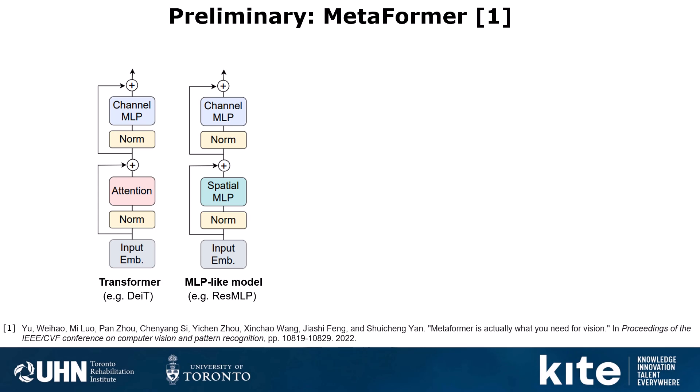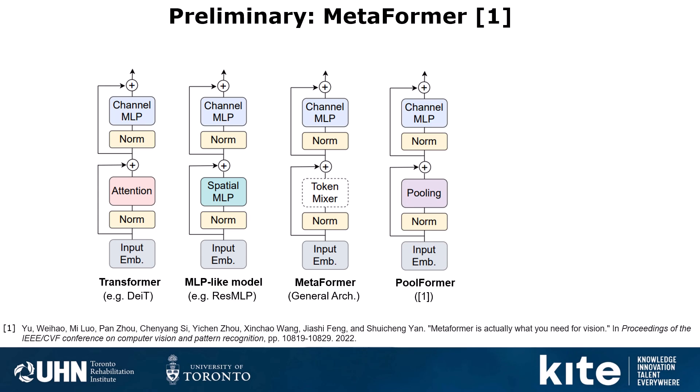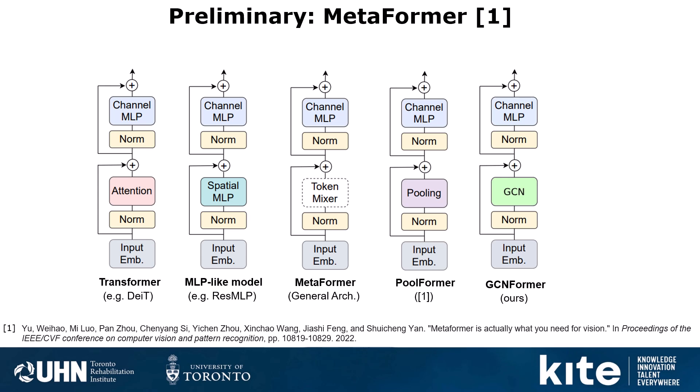In the MetaFormer paper, they propose MetaFormer as a general architecture and they say: as long as you have a token mixer module that mixes information among tokens, it is likely to generate a model that performs very well. To prove that idea, they proposed an embarrassingly simple module, as they call it, which is Poolformer. Here in this paper, following that idea, we are proposing GCNFormer as a module that can be applied in parallel with Transformers.